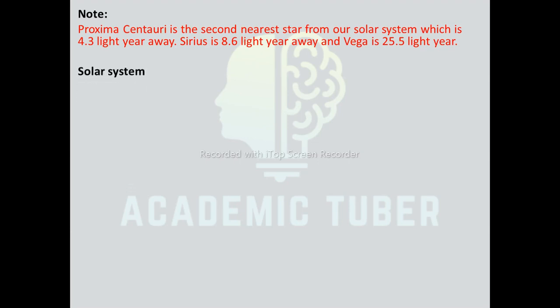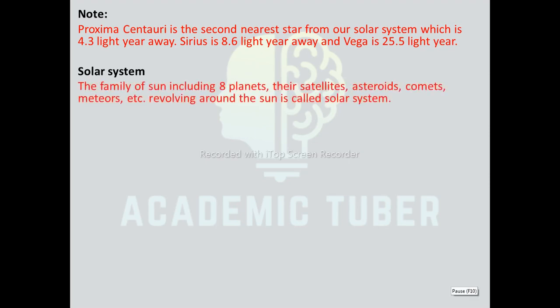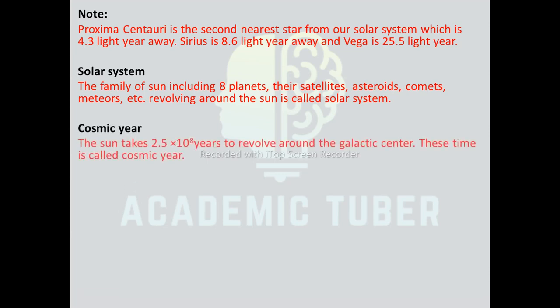Solar system: the family of the Sun, including eight planets, their satellites, asteroids, comets, meteors, etc., revolving around the Sun is called the solar system. The Sun is the main body of the solar system around which all members revolve. The diameter of the solar system is 10.5 light years.